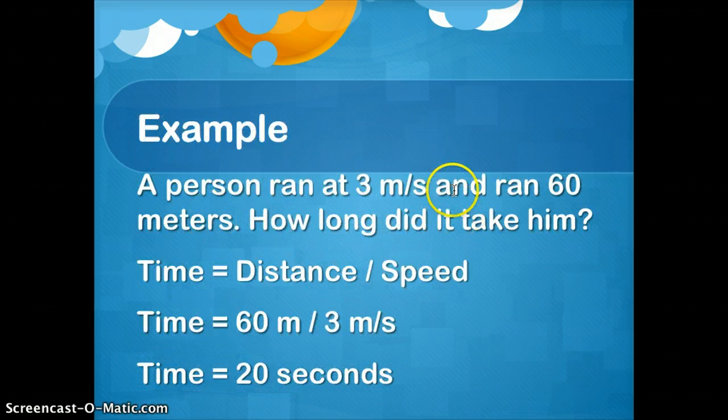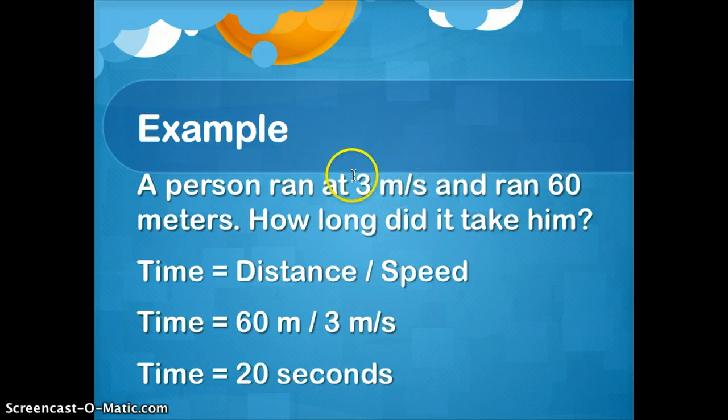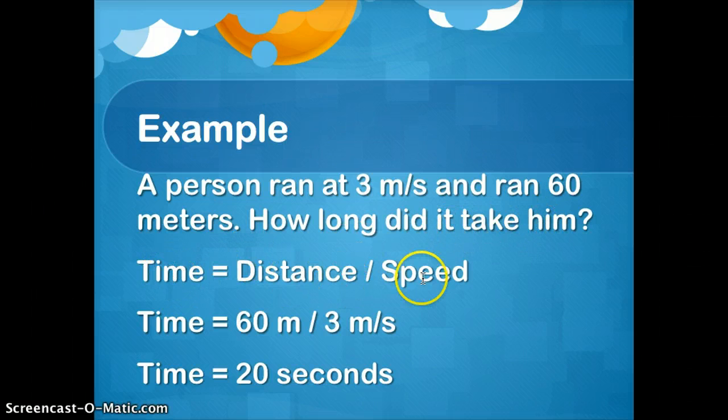So a person ran at three meters per second, which is a speed because you see meters per second. Anything per seconds or per mile or per minute or per hour is going to be a speed. So this is the speed at 60 meters. This is the distance. So how long did it take them? What was the time? You would do time equals distance divided by speed. So distance 60 meters divided by 3 meters per second. And the answer would be 20.